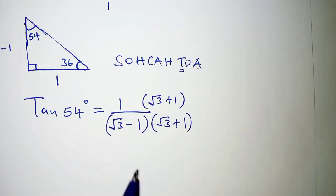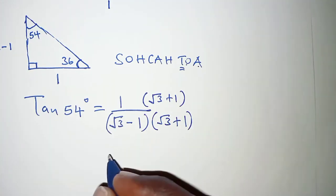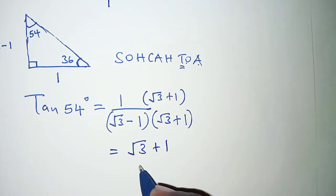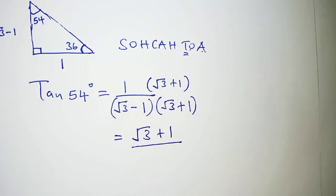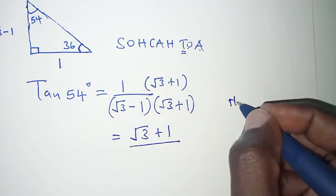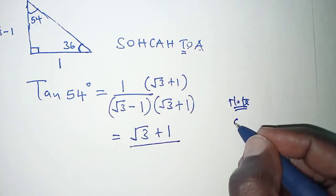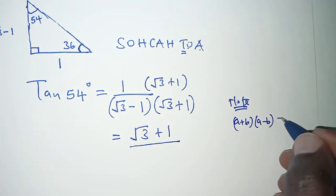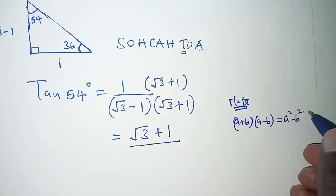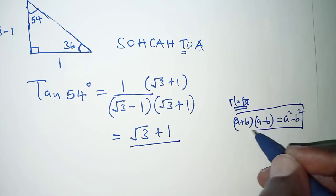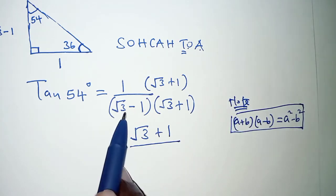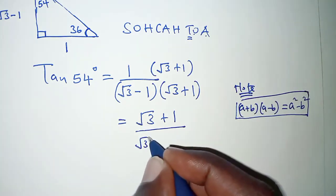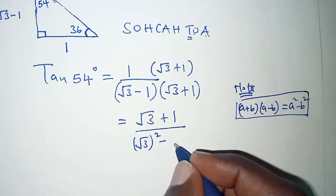So from here on the numerator when we multiply we will have root 3 plus 1, and then on the denominator we have a difference of two squares. So you can recall that a plus b into a minus b is the same as a squared minus b squared. So we will apply this quadratic identity in simplifying the denominator. So for this particular case we will have root 3 squared minus 1 squared. Remember this is a for this case and 1 is b.